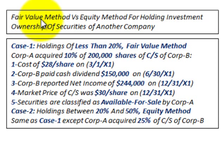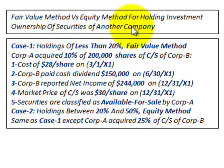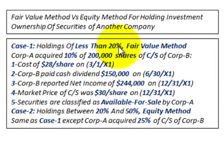What we're going to be going over here is the fair value method versus the equity method for holding an investment of ownership securities of another company, and we're going to be looking at two cases. Case one is where our investment holdings are less than 20% ownership of the other company, and this is where we use the fair value method.